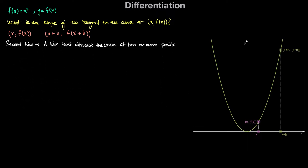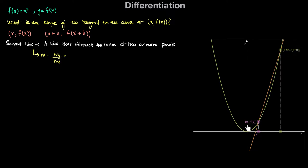Let's draw a secant line between these two points. A secant line is a line that intersects the curve at two or more points. That is the line that intersects the curve at these two points. The slope of the secant line is the change in y divided by the change in x. We can take (x+h, f(x+h)) as point two and (x, f(x)) as point one. So the change in y is f(x+h) minus f(x), and the change in x is x plus h minus x, which equals h.